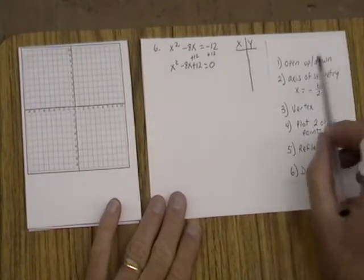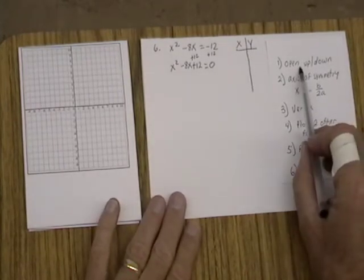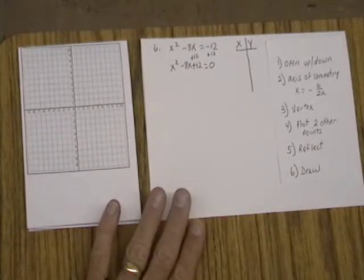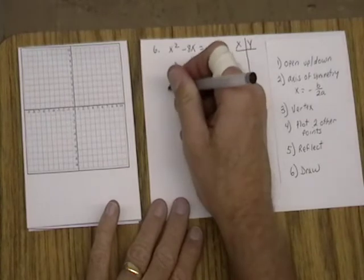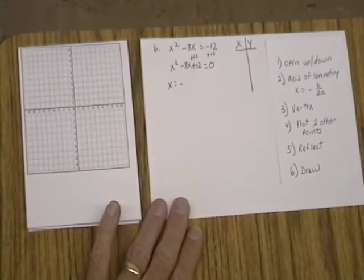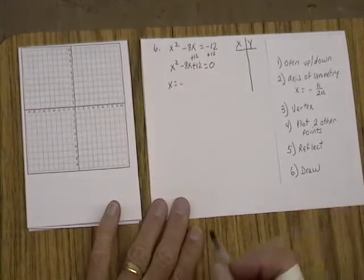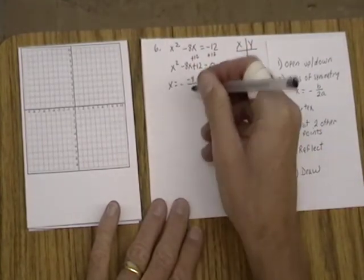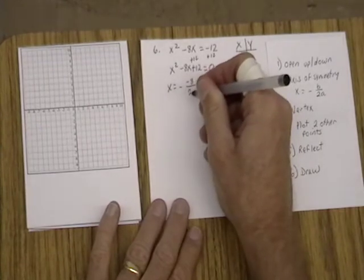So we know that it opens up because the leading coefficient is positive. And the axis of symmetry is x equals negative b over 2a. So the b is a negative 8, and so we put a negative 8 over 2a, and that's 1, so it's 2 times 1.